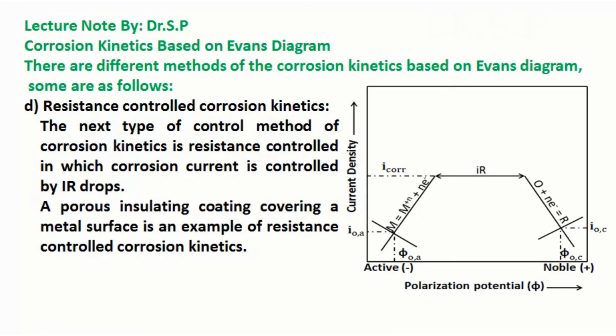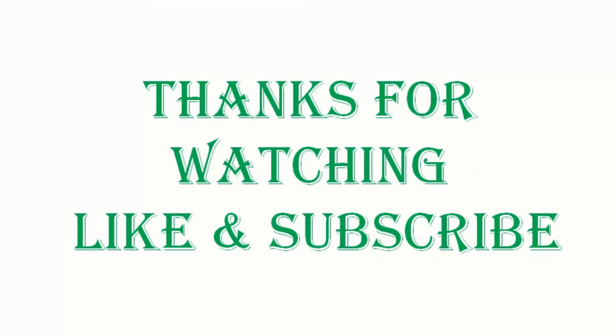The next type of control method of corrosion kinetics is resistance controlled, in which corrosion current is controlled by IR drops. A porous insulating coating covering a metal surface is an example of resistance controlled corrosion kinetics.